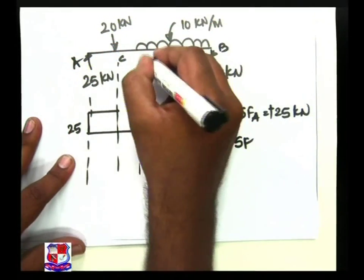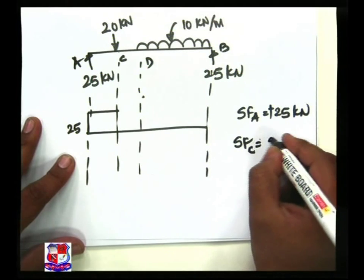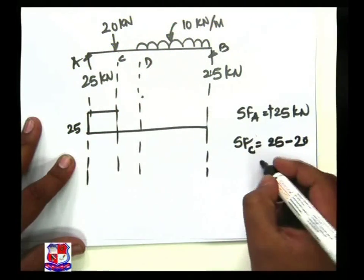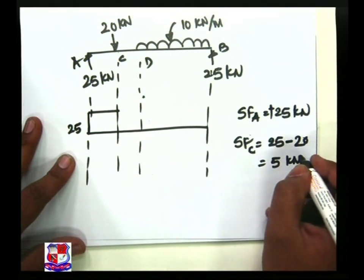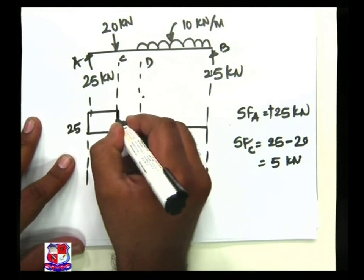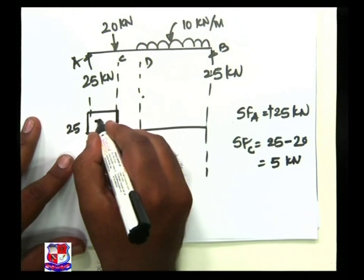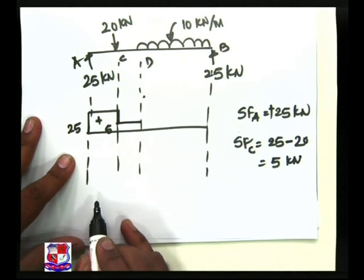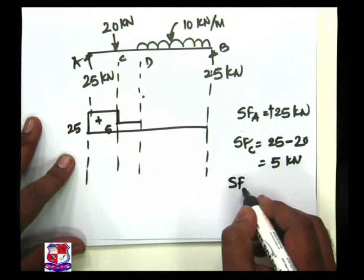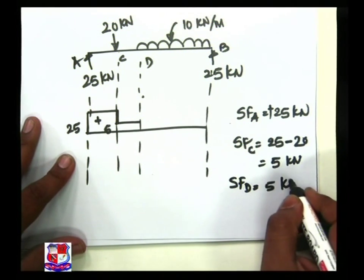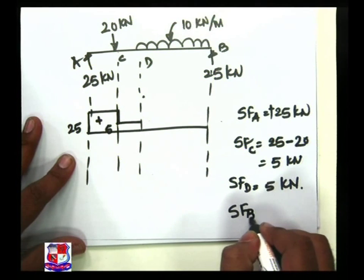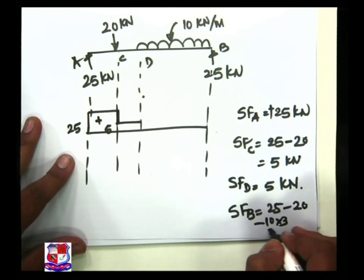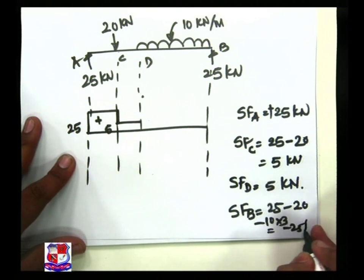Shear force at C is equal to 25 (section left, upward, plus sign) minus 20 (section left, downward), and this gives 5 kilonewton — so there is a sudden change here. Between C and D there is no load, so it is a horizontal straight line, and shear force at D is also 5 kilonewton. Shear force at B is equal to 25 minus 20 minus 10 into 3, which is equal to minus 25 kilonewton.